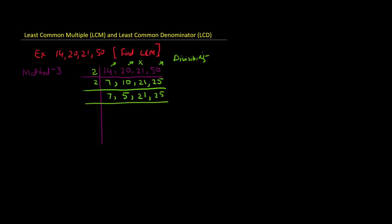For 3: 7 is not divisible by 3, and 5 is not divisible by 3. But 21 is, because 2+1=3, and the divisibility rule says if the sum of digits is divisible by 3, the number is divisible by 3. So we divide 21 by 3 to get 7, and keep 7, 5, and 25 as they are. No other number is divisible by 3, so we move on to 5.